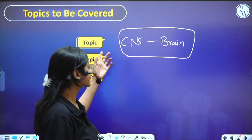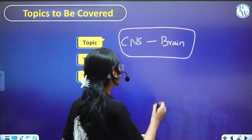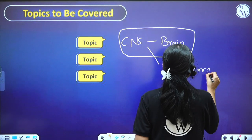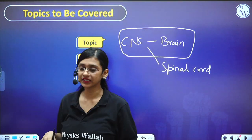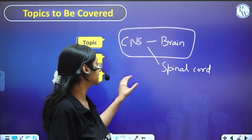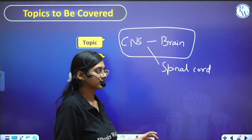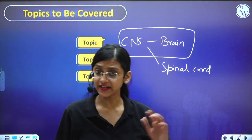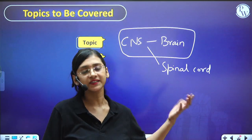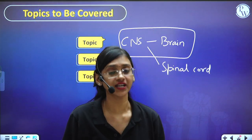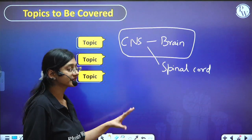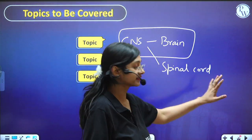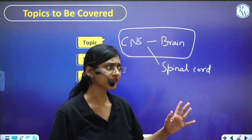The Central Nervous System has two parts: brain and spinal cord. Note that spinal cord is not in the new NCERT — they have removed the spinal cord concept, along with reflex arc, reflex action, and sensory organs from this new NCERT.